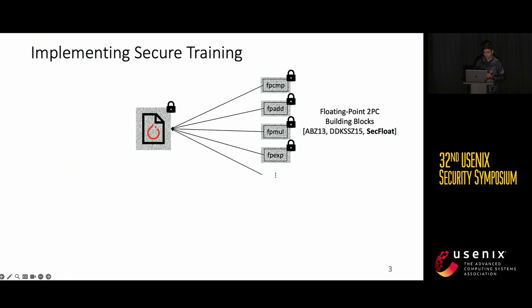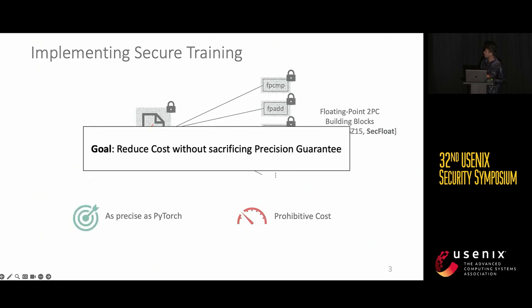The reason why we implement secure training in this manner is that we get a solution which is as precise as PyTorch. Whatever the ML practitioner intended is going to happen in the secure domain. However, as you can see, there's a problem in that because of the scale of training, we end up with a prohibitive cost that limits adoption. The goal that we set out to achieve in this work is how can we reduce the cost of secure training without sacrificing this precision guarantee? There's also an alternate approach in this space which improves the cost by introducing approximations and sacrificing this guarantee. I'll get to that approach at the end of this talk. But for now, we need both properties: precision guarantee as well as improved cost.